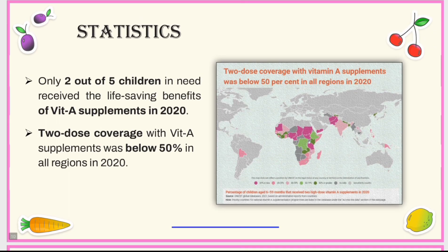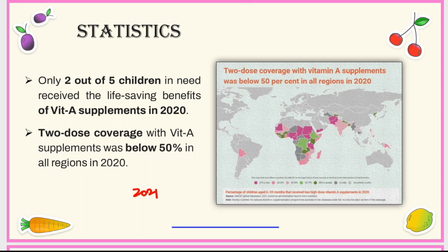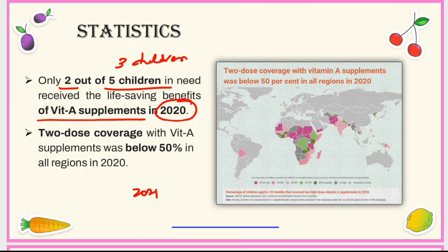There is a UNICEF global database released in the year 2021, based on administrative reports from various countries. As per this report, out of five children needing vitamin A supplementation, only two children fulfilled their need and got the benefit of vitamin A supplementation in the year 2020, meaning three out of five children were still deprived of vitamin A supplementation.